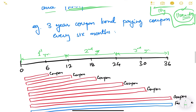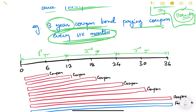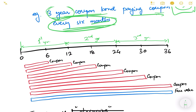For example, consider a three-year coupon bond paying coupon every six months. If the bond is issued today at zero months, after six months one coupon payment happens, after 12 months another, after 18 months a third, after 24 months a fourth, after 30 months a fifth, and after 36 months the sixth coupon plus the principal is paid. This is the standard payment timeline for a three-year semi-annual coupon bond.